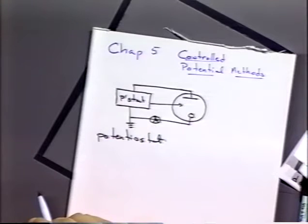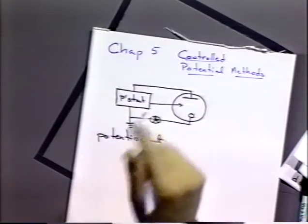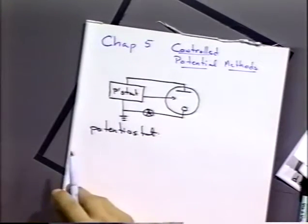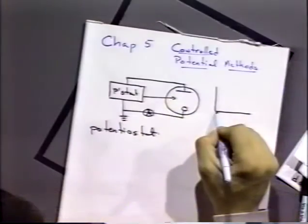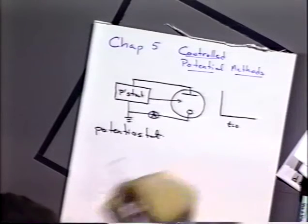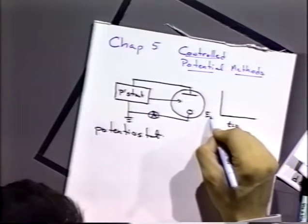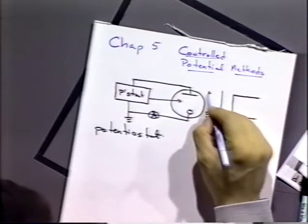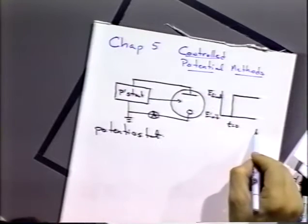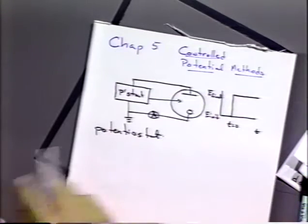We have in there some sort of a current meter to measure the current. The potentiostat has the ability to hold a potential constant, and it also has inputs so that we can control the voltage applied — either by applying a voltage sweep, commonly a voltage step, or a voltage pulse. A typical experiment starts at some initial potential at time zero and steps to a final potential.